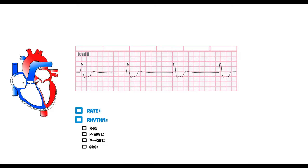This next EKG is a little interesting. We talked about junctional rhythm — when the AV node takes over because the SA node is no longer firing. But what if the AV node starts to fail and action potentials are not being conducted down into the ventricles? Guess who takes over — the Purkinje system.